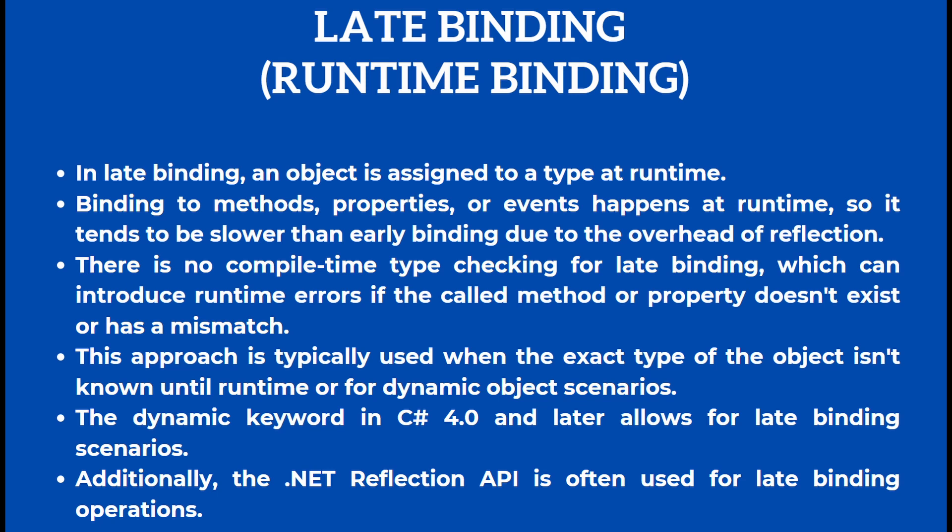Also in late binding there is no compile time type checking, which can introduce runtime errors if the method or property does not exist or has a mismatch. This approach is typically used when the exact type of the object is not known until runtime or for dynamic object scenarios. The dynamic keyword in C-sharp allows for late binding scenarios, and the .NET Reflection API is quite often used for late binding operations.